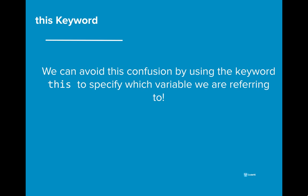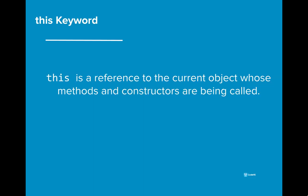We can actually avoid this confusion by using the keyword this to specify which variable we are intending to use in our program. This is a reference to the current object whose method and constructors are being called. Whenever this is called, it is referring to whatever object is calling the method or constructor.